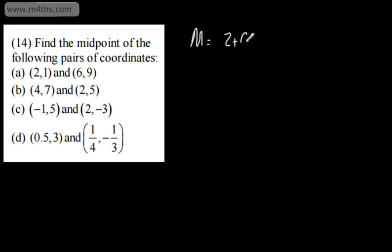we're going to have 2 plus 6, that is the x-coordinates, divided by 2. 1 plus 9, that's the y-coordinates, divided by 2. So we're going to get on here 8 divided by 2, and then we're going to get on here now 10 divided by 2. So that's going to give us 4, 5, and that is the midpoint.